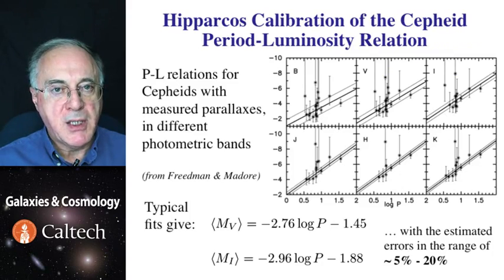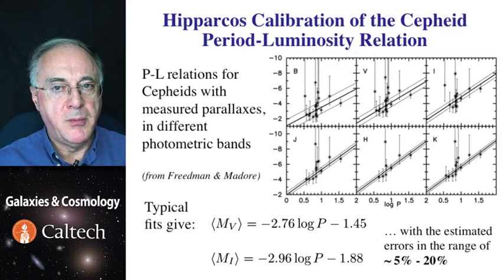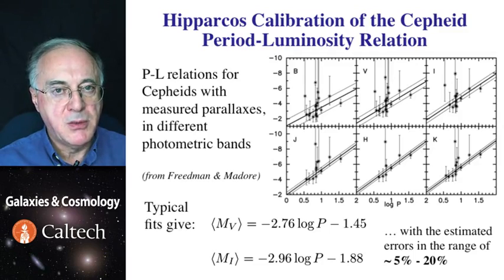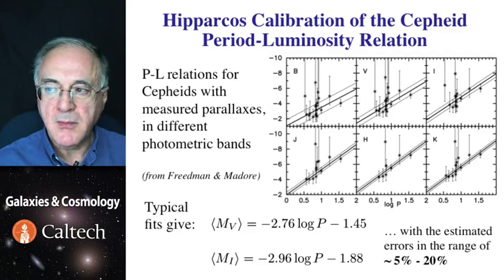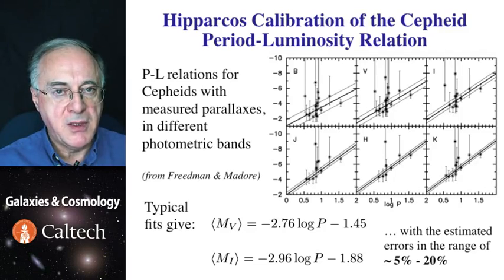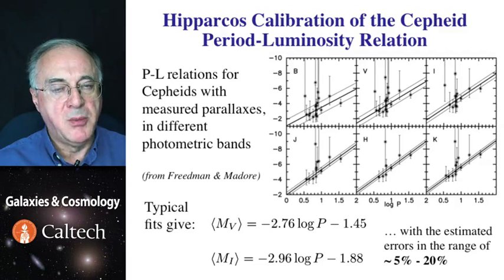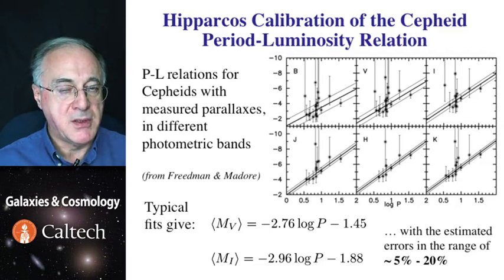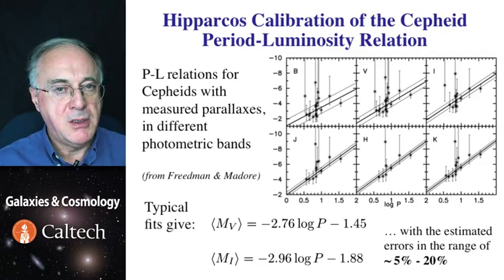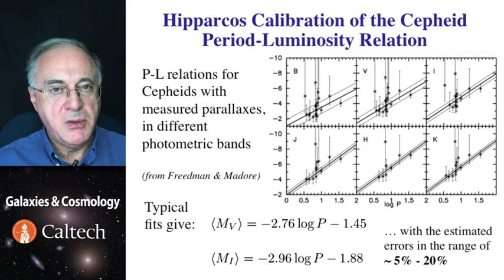Until the Hipparcos satellite flew, we did not have a parallax calibration of Cepheids. Distances to Cepheids until then were based on the distances to clusters in which they live, and distances to those clusters were largely determined using the moving cluster method. However, with Hipparcos, a handful of Cepheids was within reach, giving us the actual calibration relations for Cepheid distances. As you can see, they are fairly noisy, but for the first time they gave us an absolute calibration of the period-luminosity relations for Cepheids.